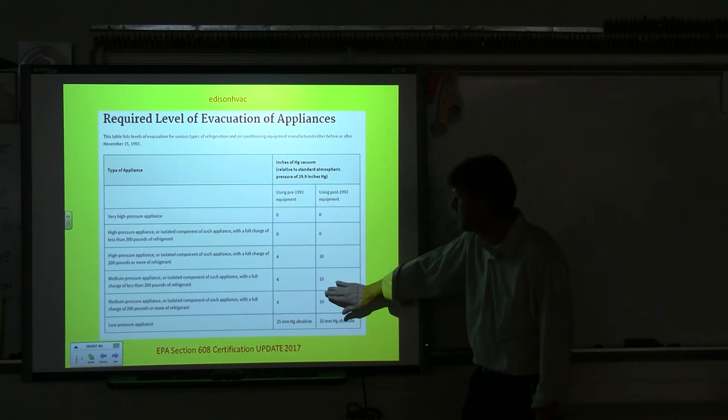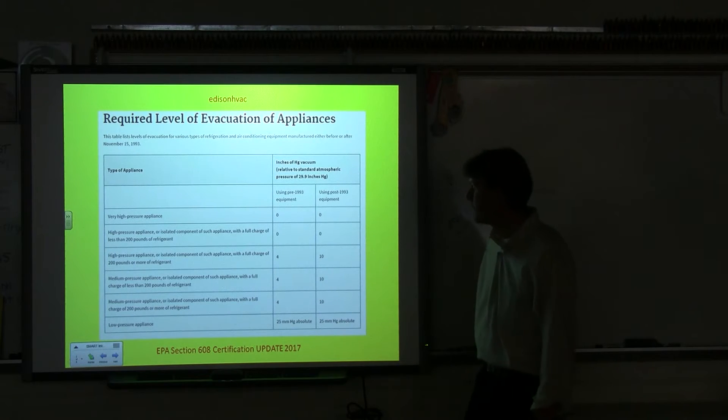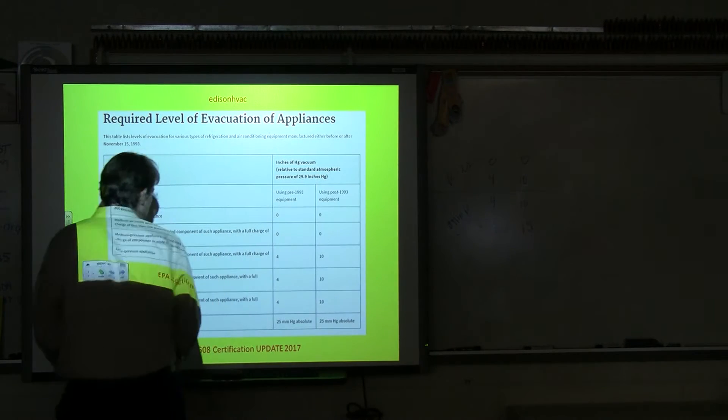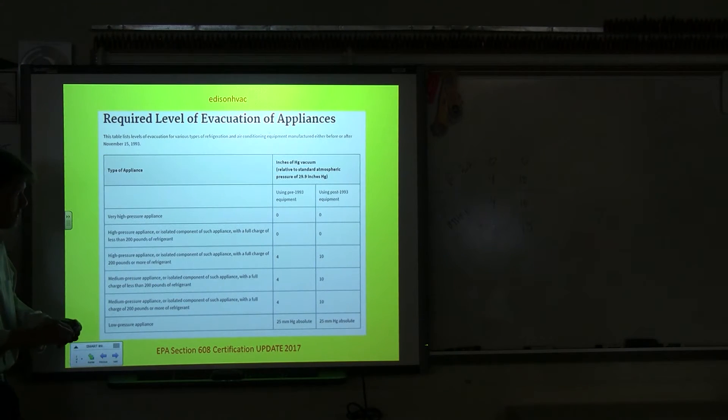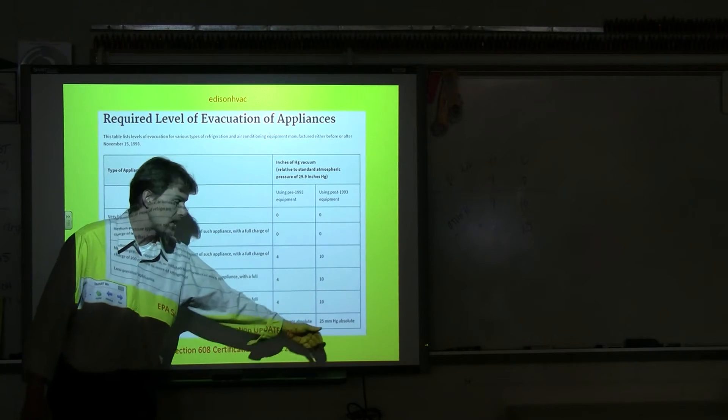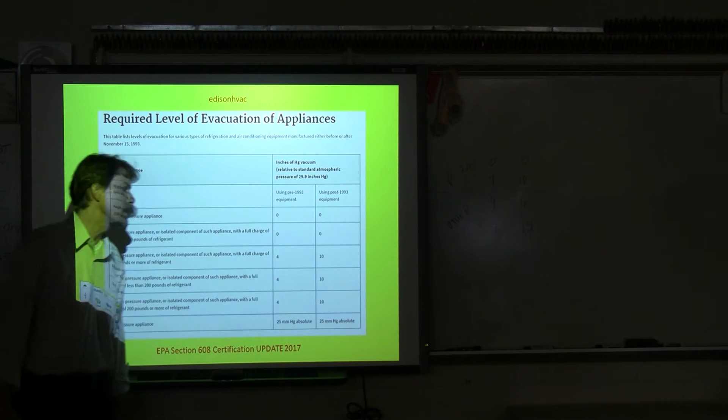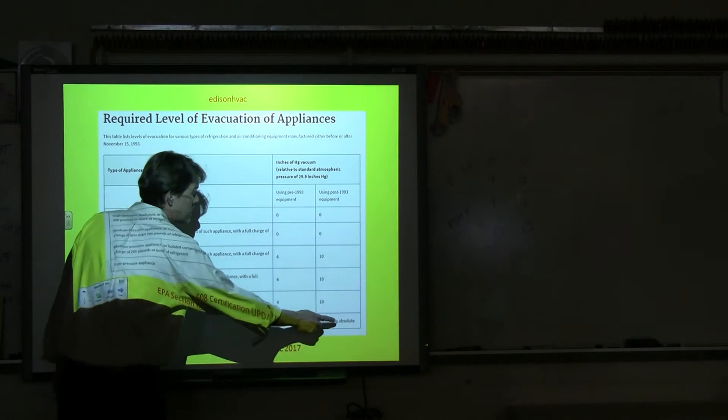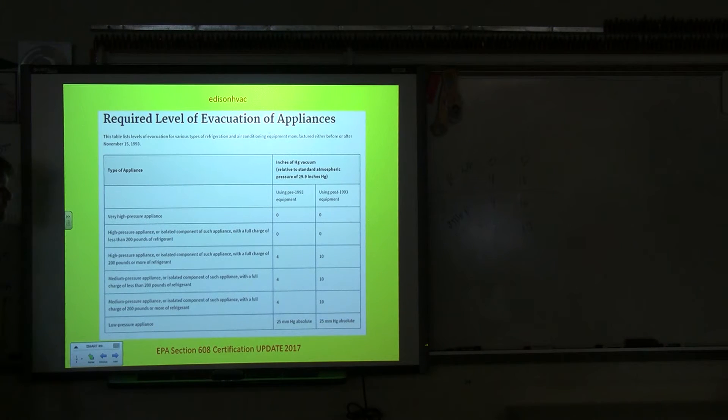Down here, this was I think 15 on the other one. And then for low pressure appliances, those are the ones that operate below atmospheric pressure. It used to be 29 inches in mercury before and after it was absolute. Now they've changed it to both being a rating of 25 millimeters HG absolute. So you're probably going to need for this one a micron gauge that reads in millimeters that you can change through.